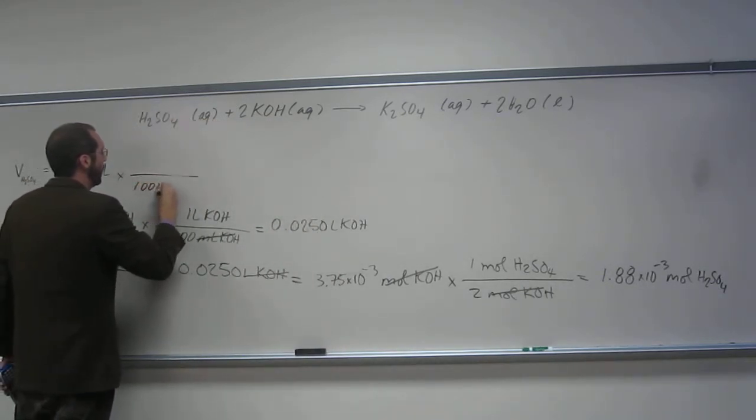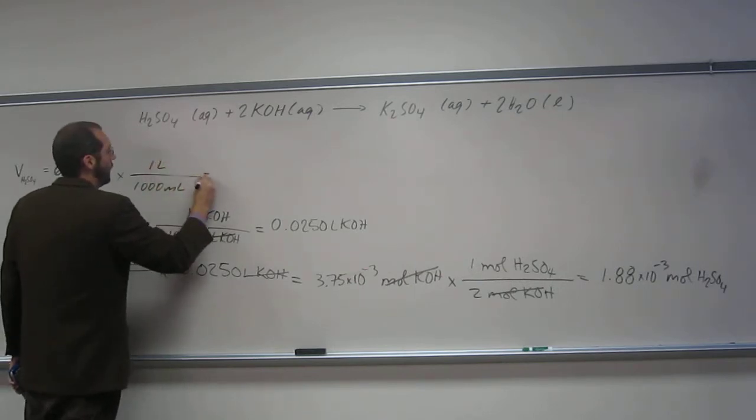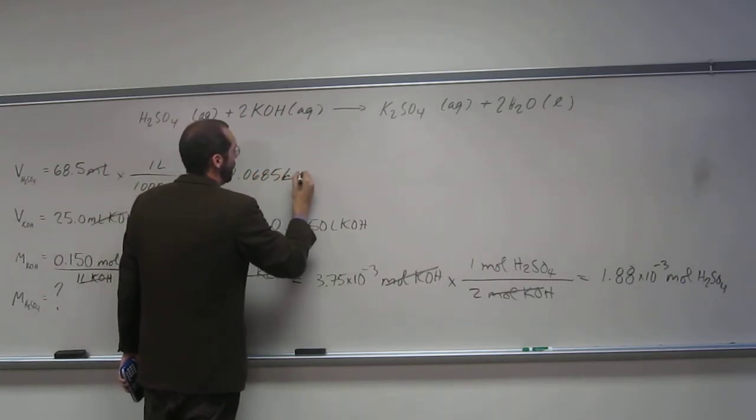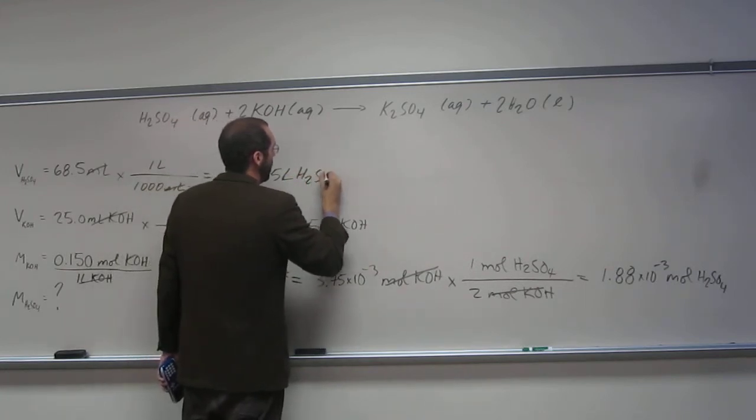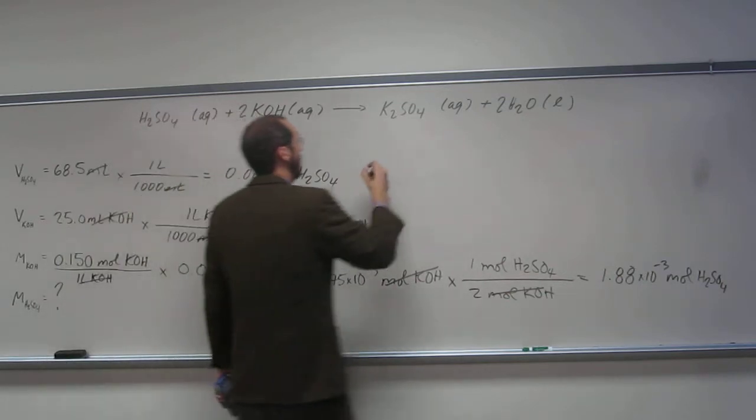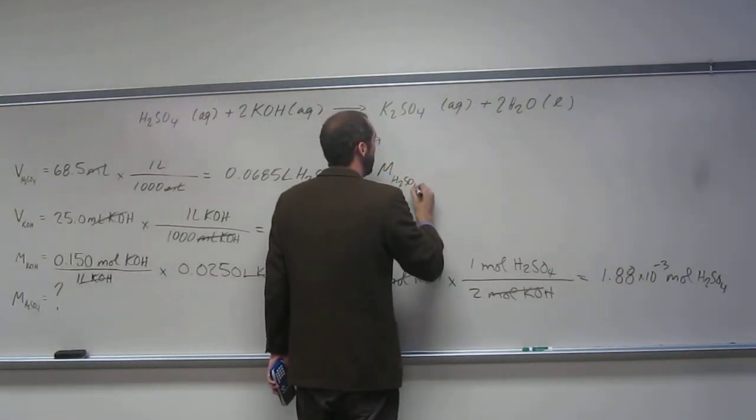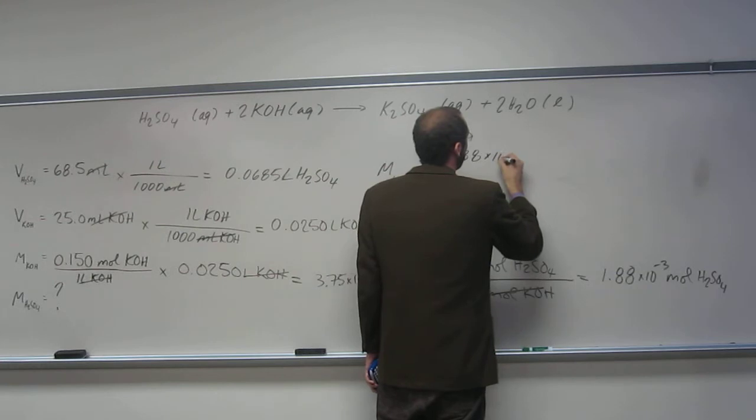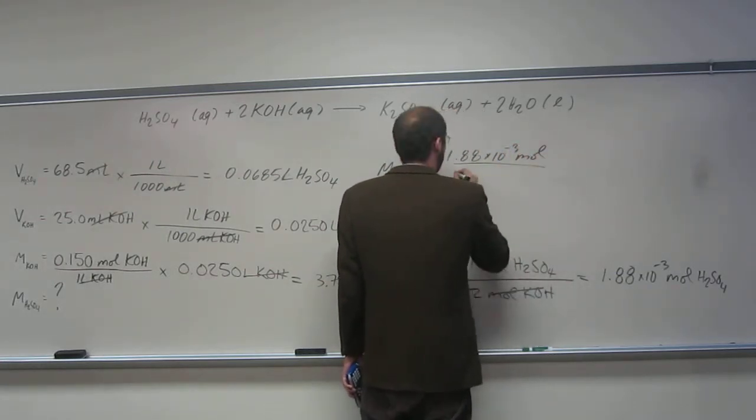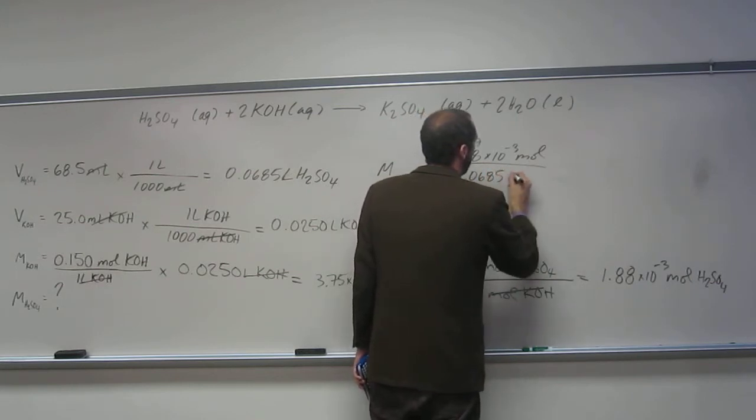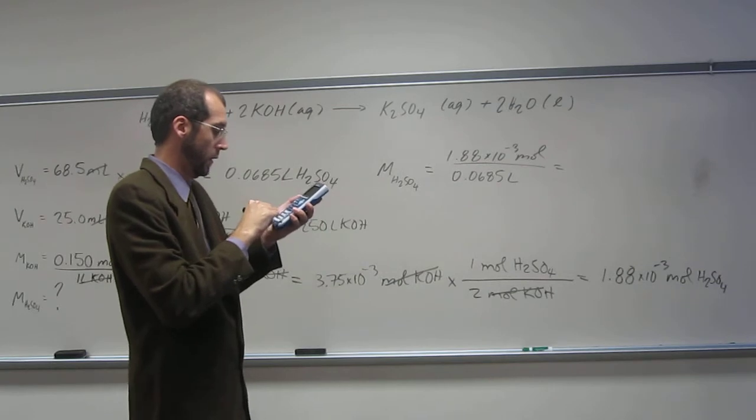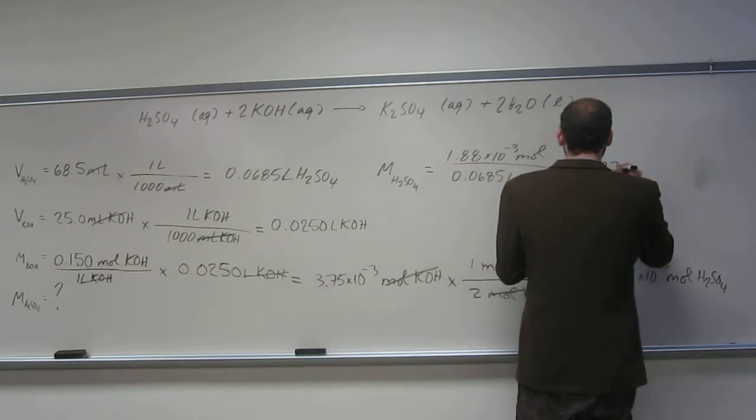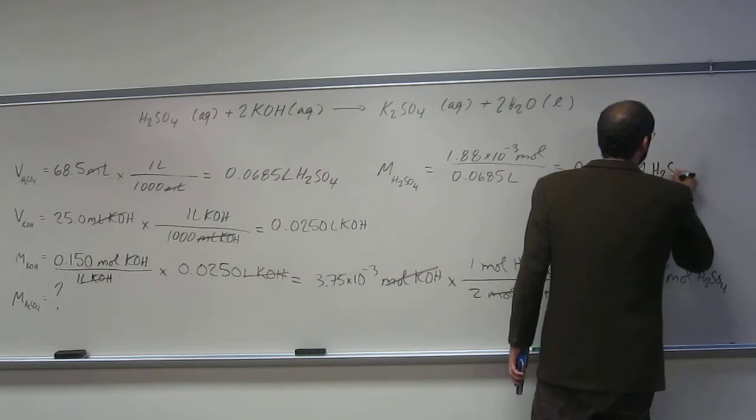We know the mils, we know the volume. So the molarity of sulfuric acid is going to be the moles divided by the liters. And in this case I get 0.0274 molar sulfuric acid.